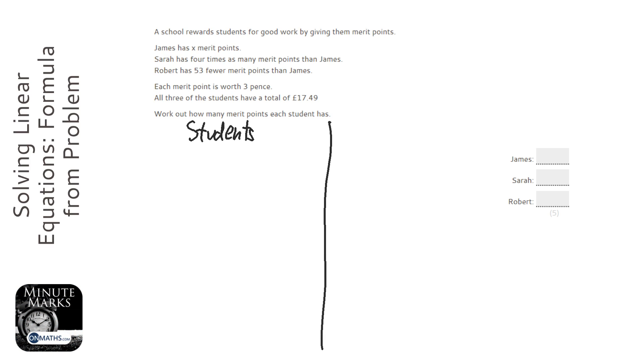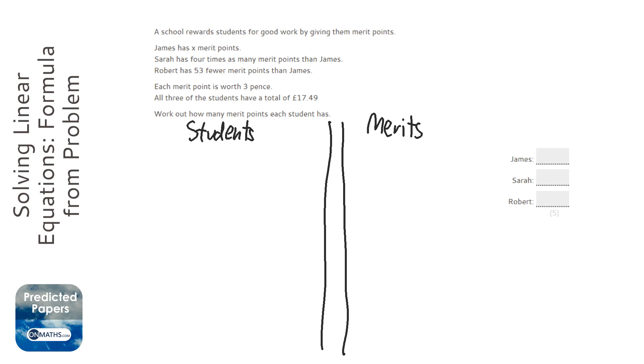And then what I'm going to do on the right hand side is work out the merit points. So the students we've got are James. Now James has x merit points, that's nice and simple.